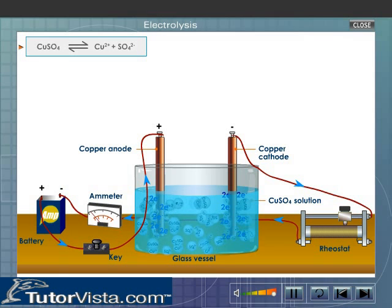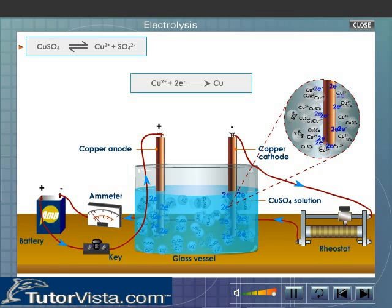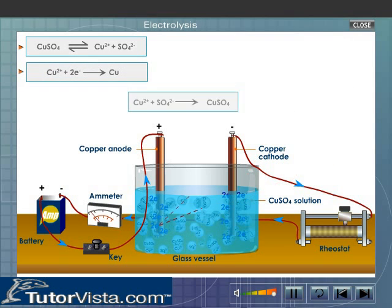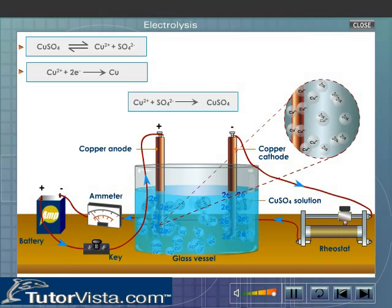What exactly is happening at the electrodes? At the cathode, the copper ions get neutralized by the incoming electrons from the external circuit and copper gets deposited on the cathode. Whereas the sulphate ions react with copper to form copper sulphate.